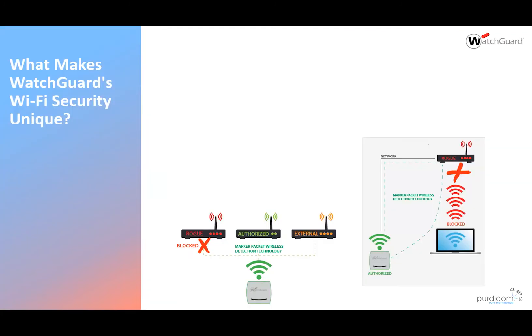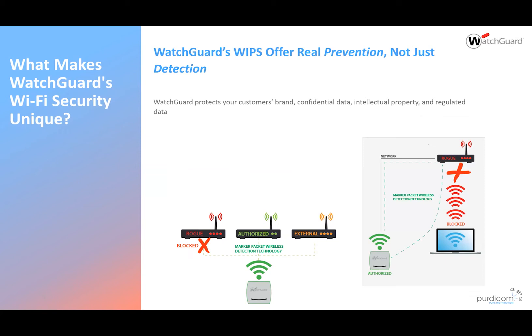Here at WatchGuard, we have a unique system with 28 patterns that help us identify and protect the network. We use a thing called marker packets. Our marker packets are transmitted on the wire, and it's essential for all Wi-Fi APs to transmit them. Our own APs and WIPS systems are able to identify marker packets, so when we see a marker packet being transmitted that doesn't come from one of our own systems, we know to take it out.